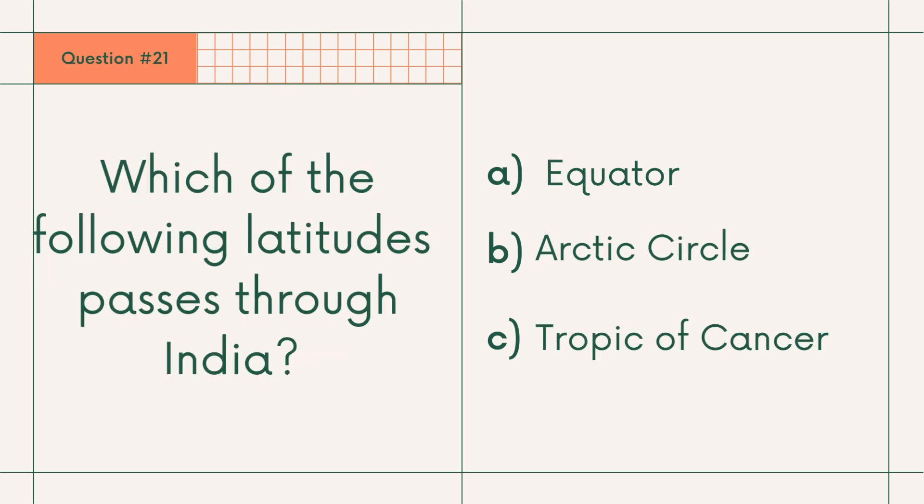Question 21: Which of the following latitudes passes through India? A. Equator, B. Arctic Circle, or C. Tropic of Cancer. Answer: C. Tropic of Cancer.